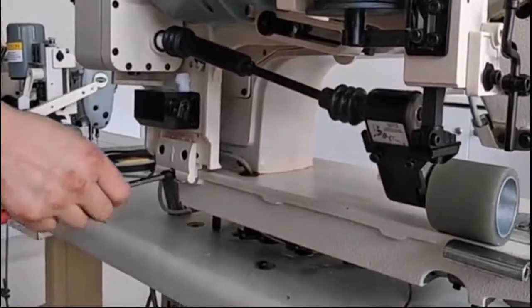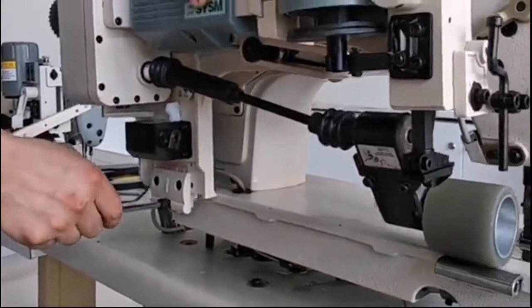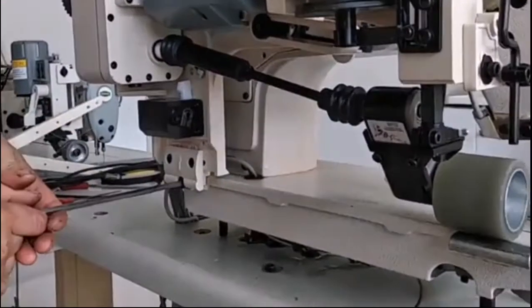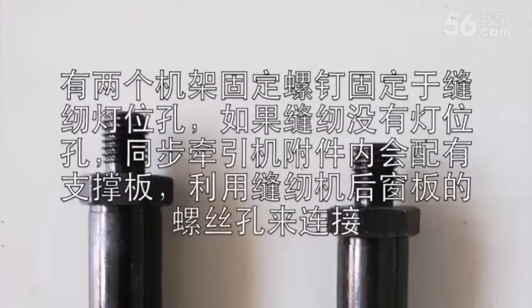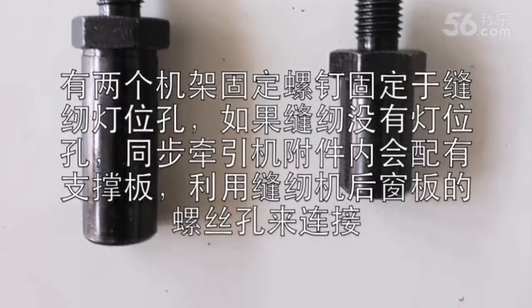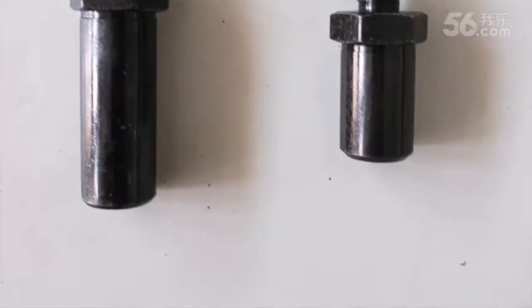Use a self-tapping triangle screw to fix the puller into the machine. It has two fixed screws and you need to use a suitable one.